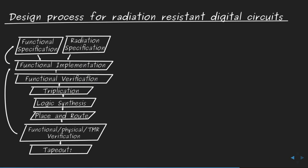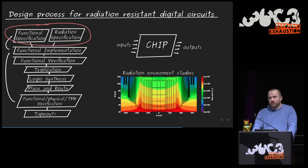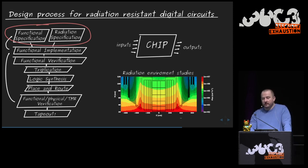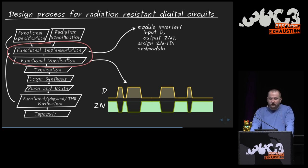Having covered the basic effects, here is the design flow for radiation-hardened circuits. It always starts with specifications: understanding the radiation environment, coming up with specifications for total dose and single event upset rate. At this stage it may also be decided to move some functionality outside the detector volume to use off-the-shelf commercial equipment for number crunching. Assuming a custom ASIC is used, the next step is functional implementation using hardware description languages like Verilog or VHDL, with extensive simulations to verify functional goals.